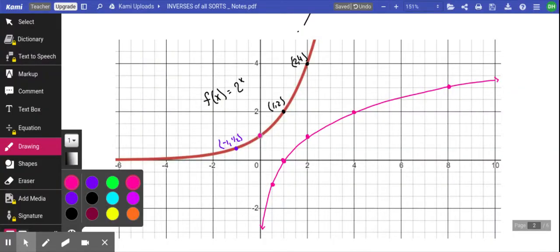Here's something that's worth maybe noting in your notebook. If f has a horizontal asymptote, right here, f inverse, which is this function in pink, is going to have a vertical asymptote. So if f has a horizontal asymptote, f inverse will have a vertical, and vice versa.